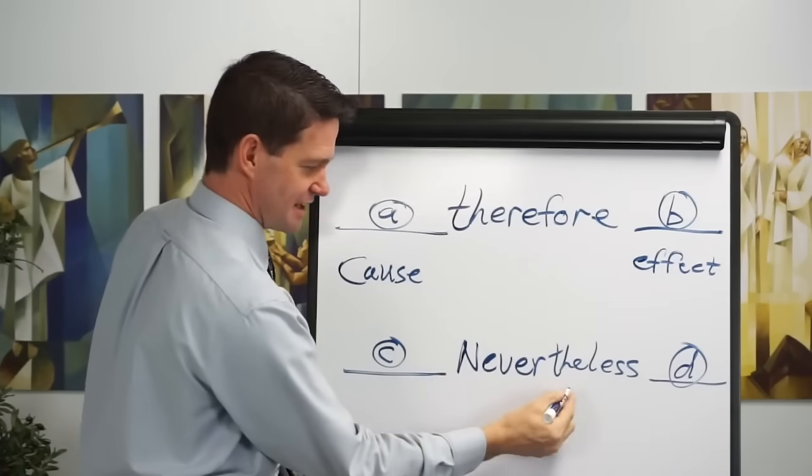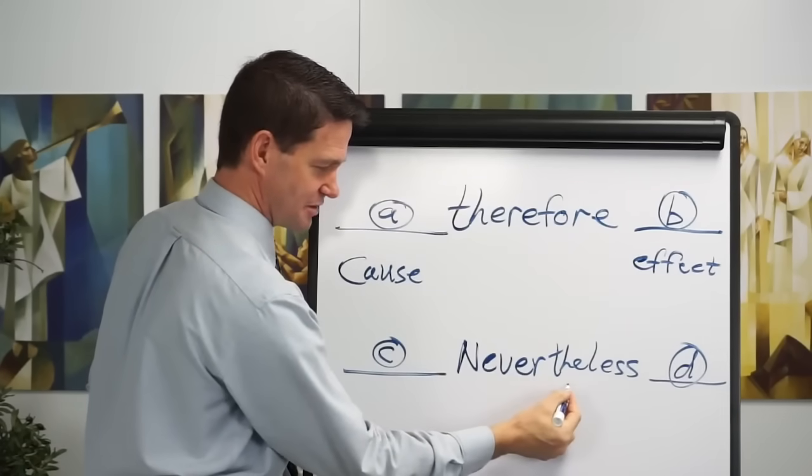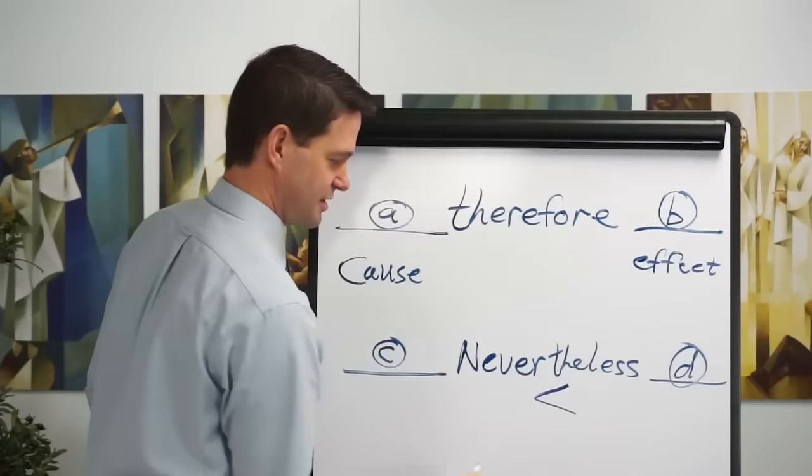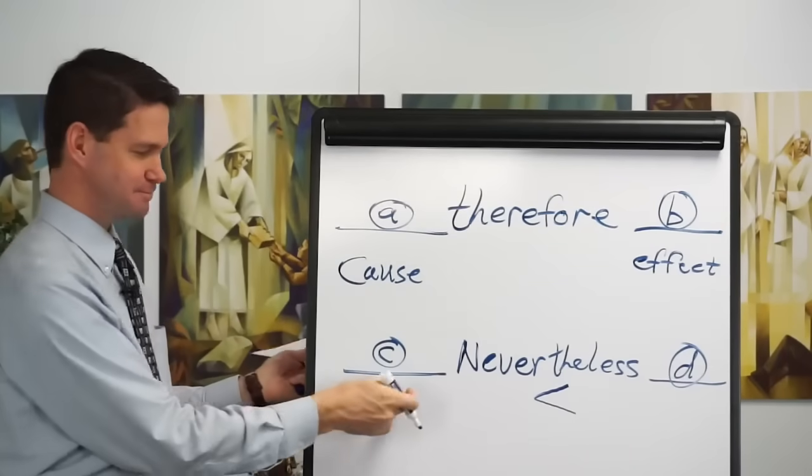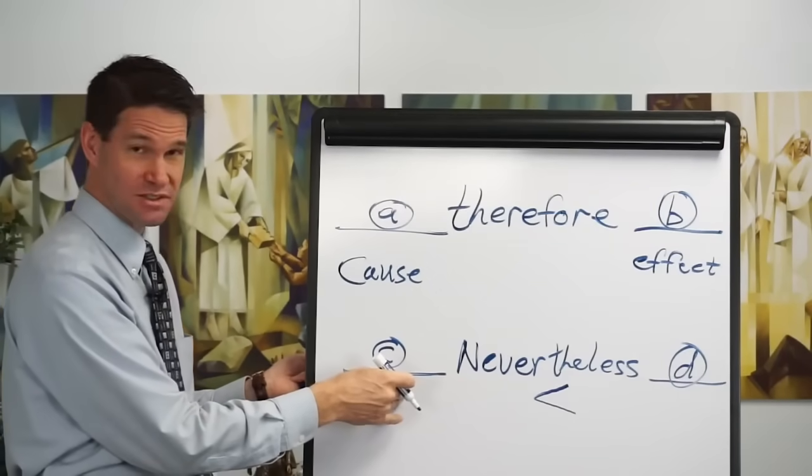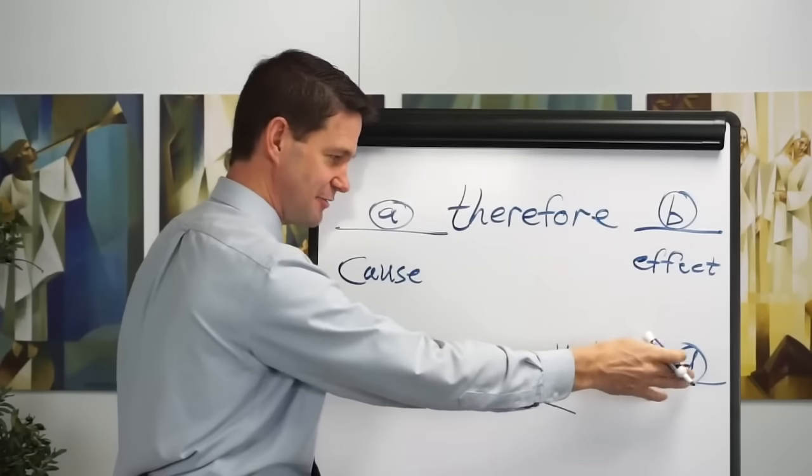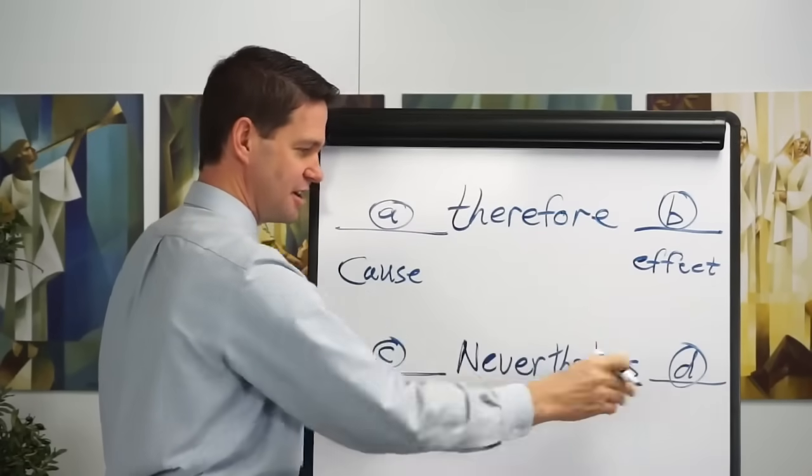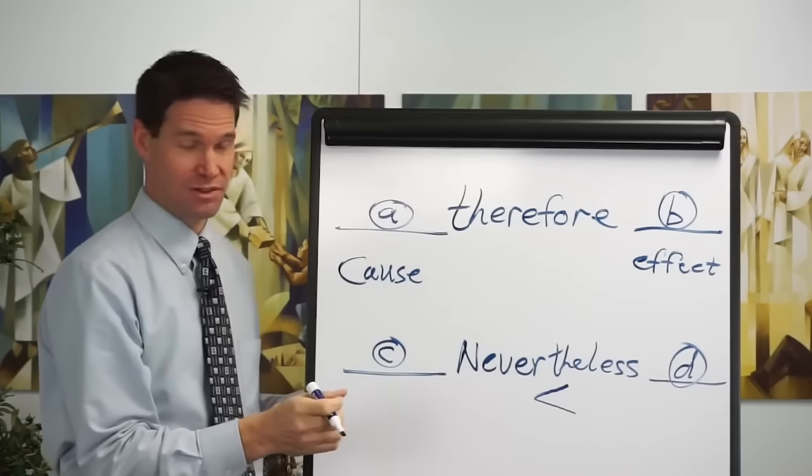Nevertheless, there are a couple of simple ways to look at this. You could put a less than sign. C is always going to be less than D, because D is never the less. It's always the greater. You always put the greatest emphasis over here on what follows.